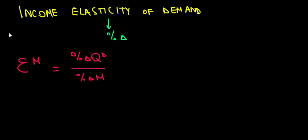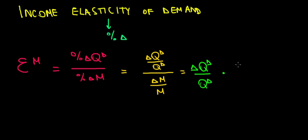That would look like the change in quantity demanded over the initial quantity demanded, divided by the change in income relative to the initial income. Just like before, let's group the terms with the change together. That would be the change in quantity demanded divided by the quantity demanded. If we divide by this thing, we multiply with the inverse, so times M divided by the change in M.